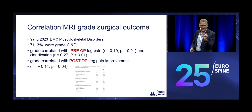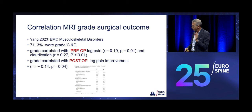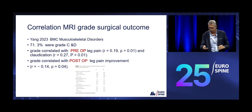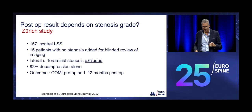Young and colleagues have also published a paper where, again, 71.3% — exactly the same number as the previous study — were C and D grades. So constantly, all surgical series have three-quarters of C and D grades. Pre-op leg pain was correlated with the grade and post-op results, but the correlation coefficient was rather weak with small coefficients.